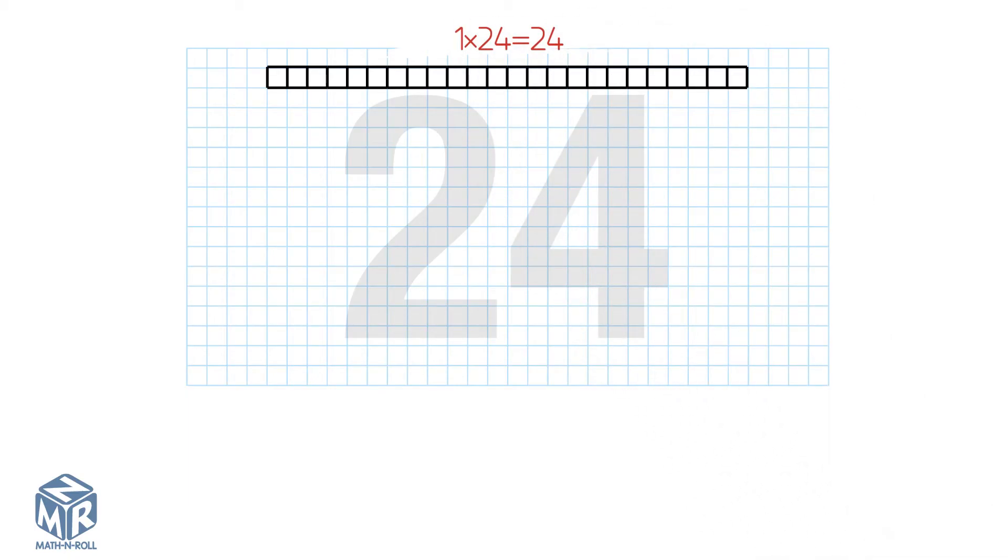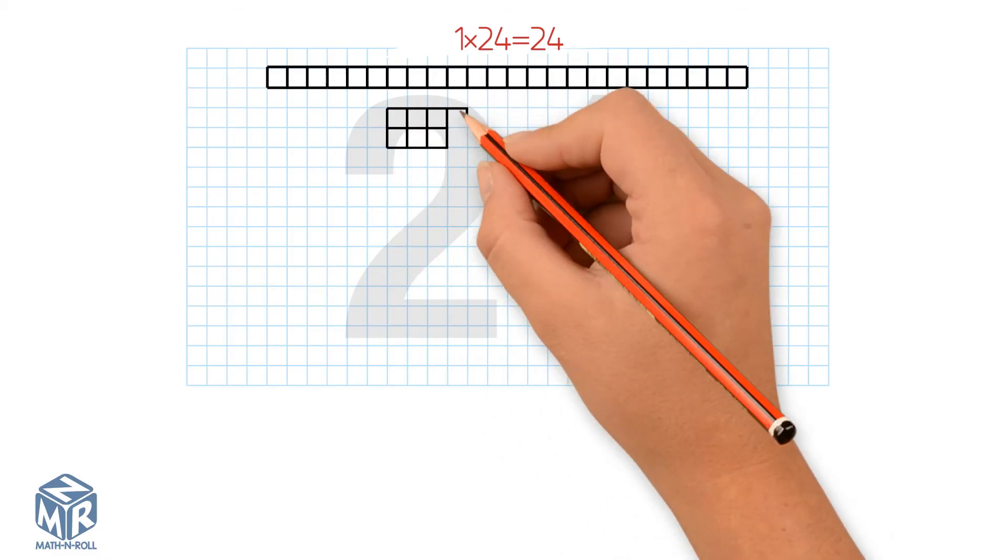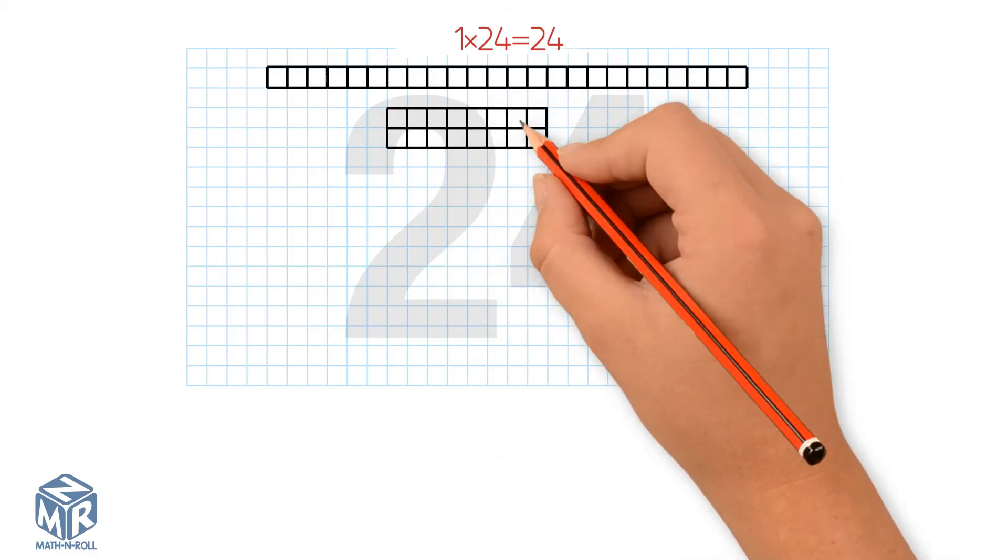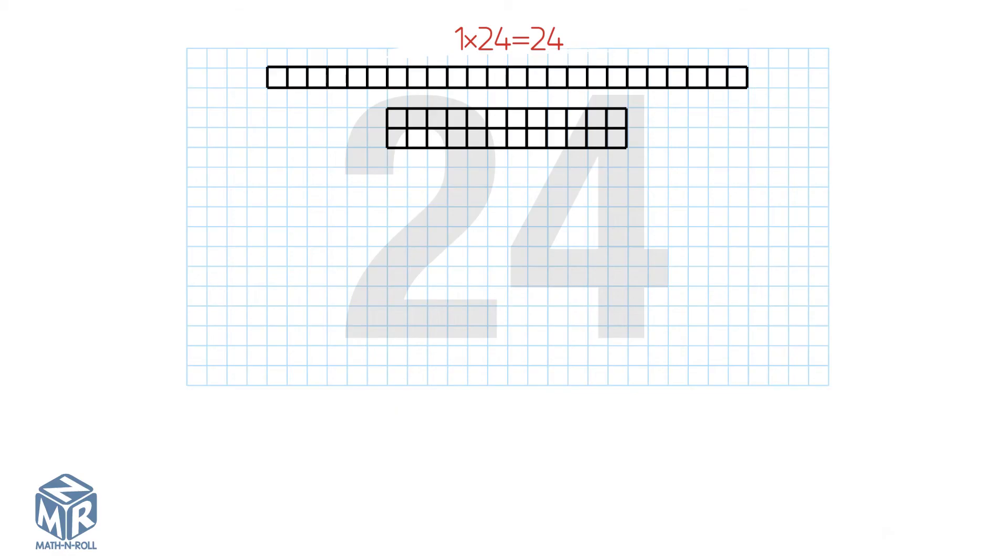Let's make another array with 2 rows. One by one we fill in the columns. We have 12 even columns, so 2 times 12 is a factor pair.